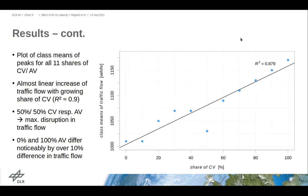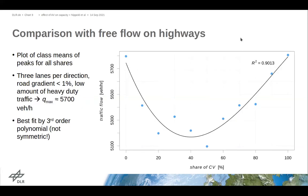We also looked at free flow traffic on highways. Here the situation is similar. These are the class means of the maximum flow rate observed on a highway section. For pure conventional and pure automated traffic the values were almost the same, and for 50% the disturbance is maximum because of the different driving regimes. This can be fitted by a third order polynomial, which means for an increase in automated traffic the slope of the gradient is much higher, so it's much better if the traffic flow is not interrupted by a red traffic light.